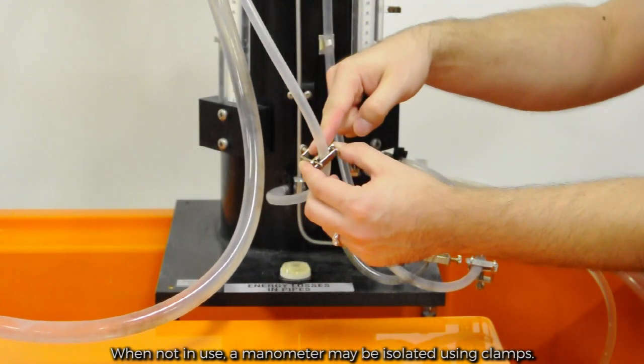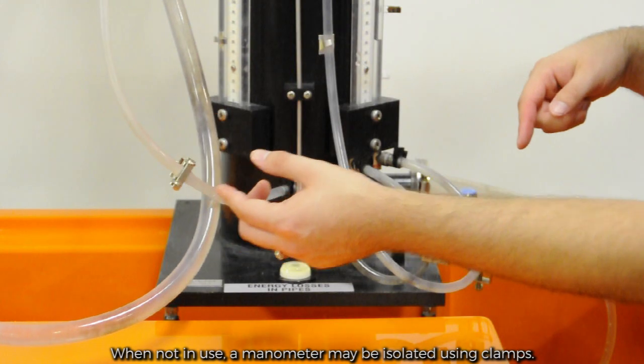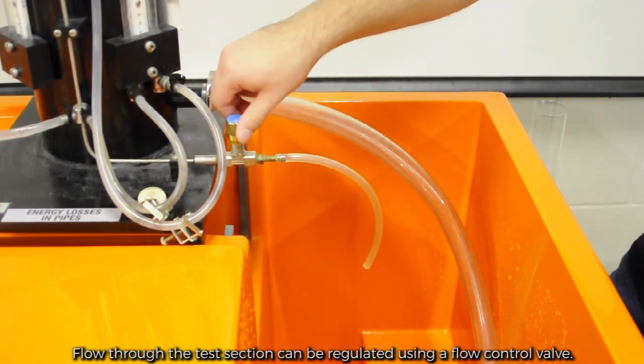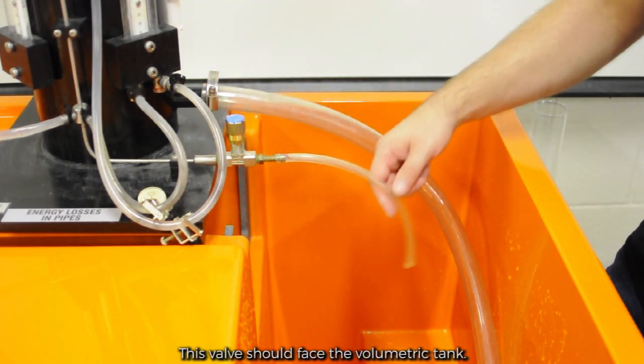When not in use, a manometer may be isolated using clamps. Flow through the test section can be regulated using a flow control valve. This valve should face the volumetric tank.